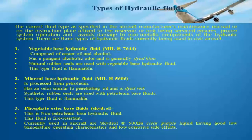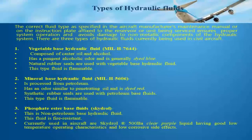To summarize, vegetable-based fluid is composed of castor oil and alcohol and is blue in color. Mineral-based hydraulic fluid is processed from petroleum and is red in color. Phosphate ester-based fluid is a non-petroleum-based hydraulic fluid and appears as a clear purple liquid.